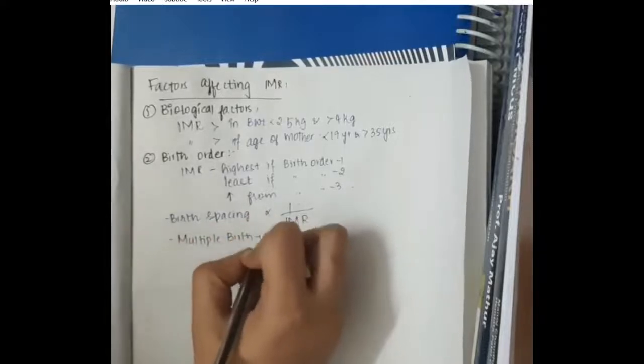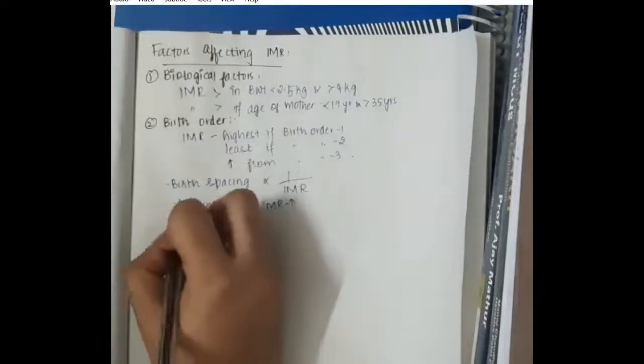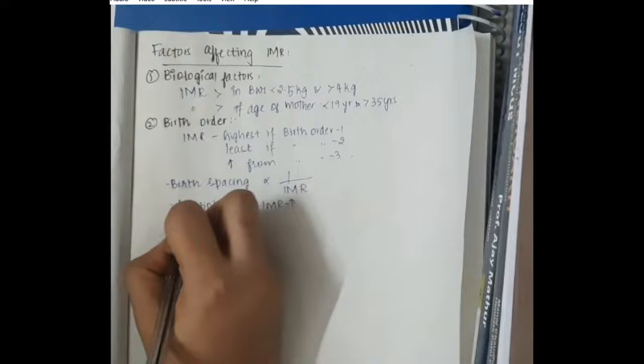Birth spacing is inversely proportional to infant mortality rate. Birth spacing will help the couple to have less smaller children. As a result, they can take care of the baby very well because the other child will be a little grown up like 5 years, 6 years.